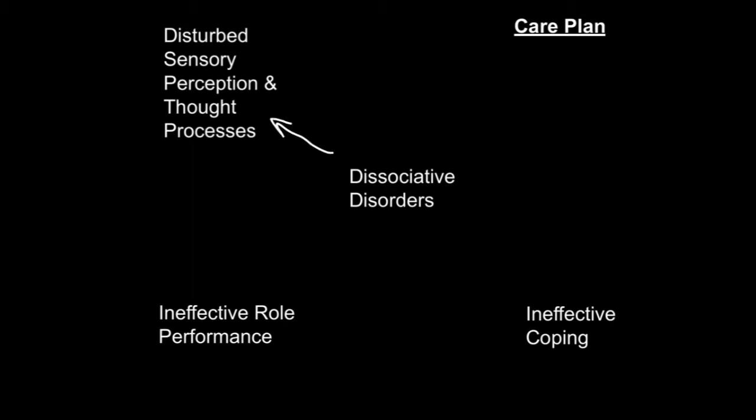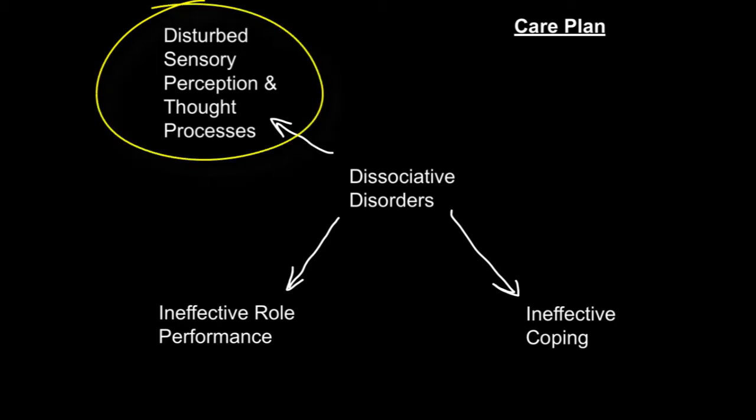Disturbed sensory perception and thought processes, ineffective role performance, and ineffective coping are all nursing diagnoses that apply to the patient experiencing a dissociative disorder. For disturbed sensory perception and thought processes, you can implement strategies for identifying the underlying source of anxiety aimed at recovering unconscious content, such as free association or dream description. You can also use projective psychometric tests, such as Rorschach or the thematic apperception test. You could also implement hypnosis, which assists in reintegrating the alter personalities. Administering thiopental sodium or pentothal may be beneficial in eliciting a truthful history from these patients. Supportive insight therapy with the goal of surfacing and integrating traumatic experiences in order to learn new ways of coping with future anxiety is another intervention that can be used. Talk therapy aims to desensitize traumatic memories.